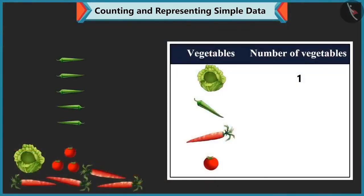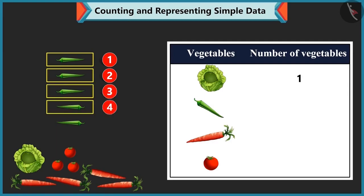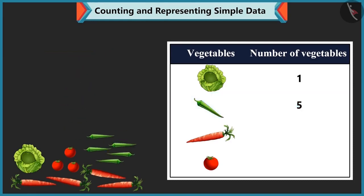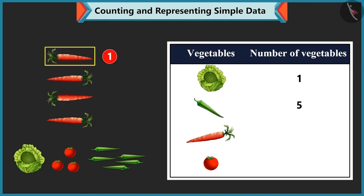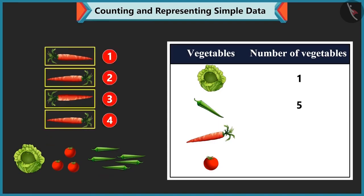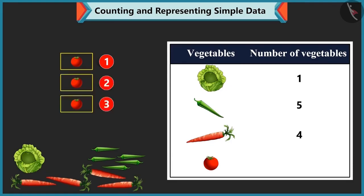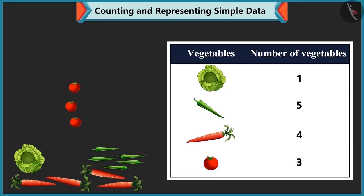Bubbly counts: there are 1, 2, 3, 4 and 5 green chilies, so we write 5 against green chili. Carrots are 1, 2, 3 and 4, so we write 4 against carrot. Tomatoes are 1, 2 and 3, so we write 3 against tomato.